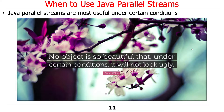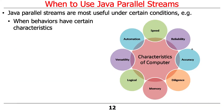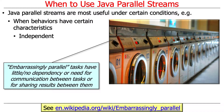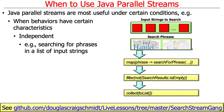Parallel streams are most useful under certain conditions — in particular, when the behaviors in your program have certain characteristics. One thing that makes a big impact is for the tasks or subtasks you're running to be independent of each other, often called embarrassingly parallel. An embarrassingly parallel program has a bunch of tasks with little or no dependency on each other, no need to communicate between tasks to complete them, and no need to share results. Classic examples include doing your wash with lots of different washers and dryers, searching for phrases in a list of input strings, or downloading and processing images.